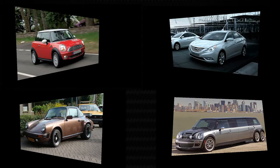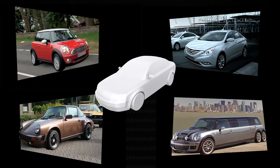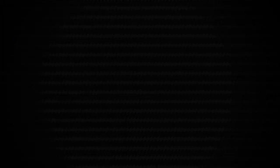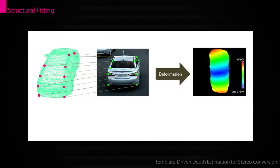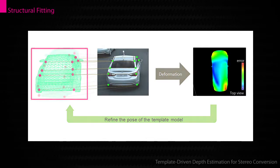Typically, objects in the same class share a similar structure. Utilization of an exemplar 3D model helps estimate the depth of a broad range of 2D objects. The structure-feeding technique iteratively deforms the exemplar 3D model to conform to user-specified 2D correspondences in the image. During the iterative process, the optimization of rigid motion minimizes the distortion of the deformed model.